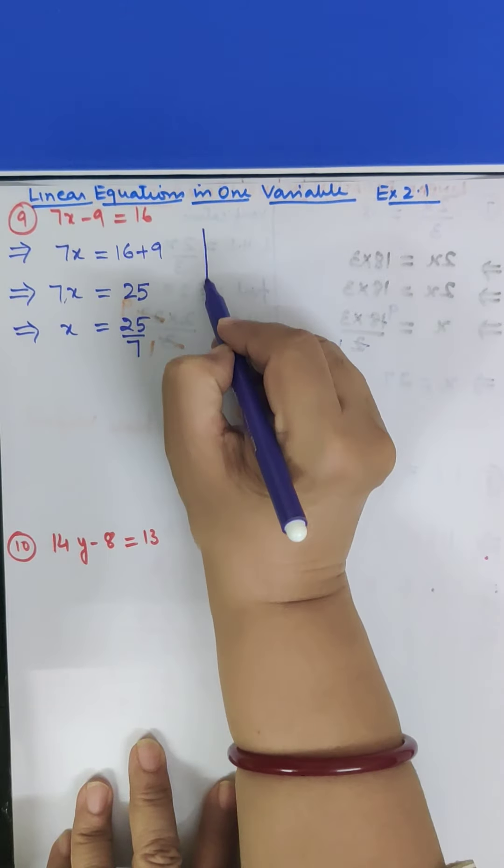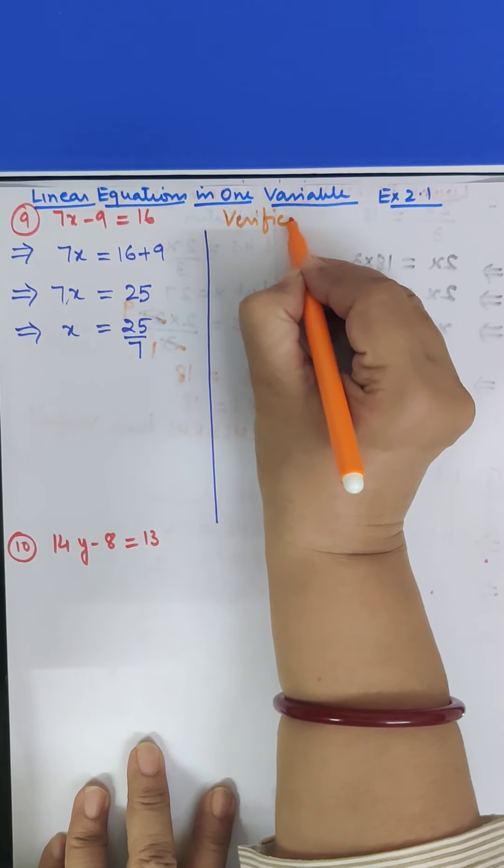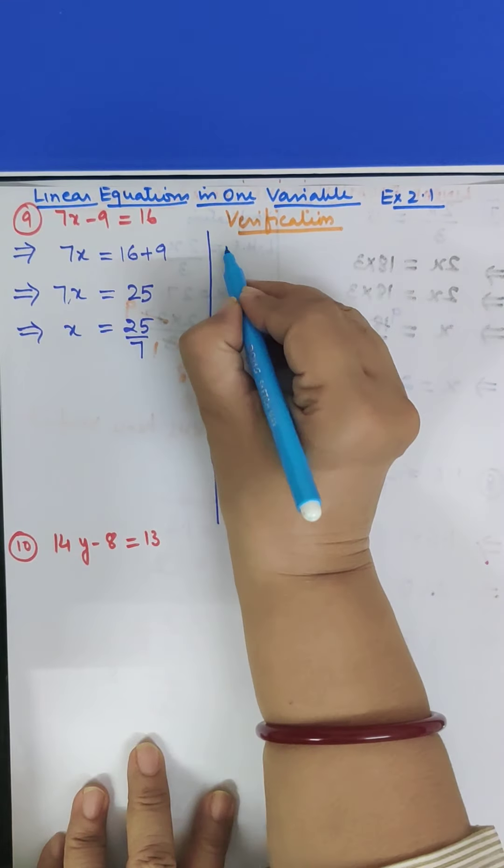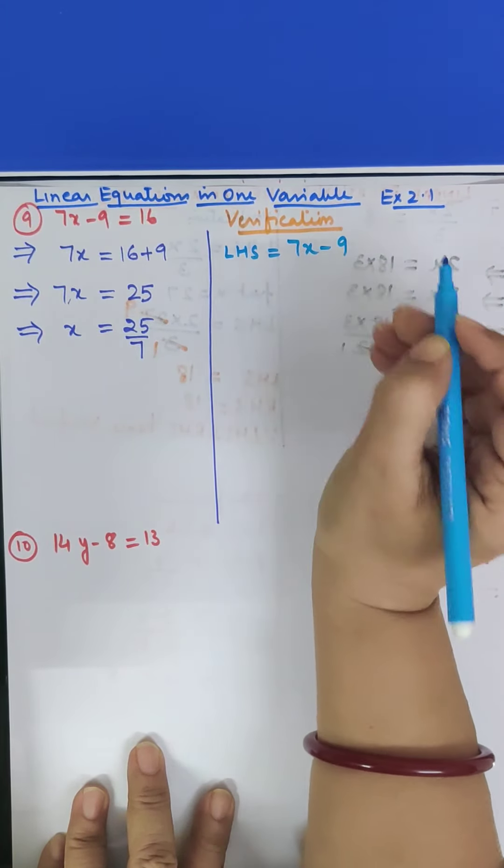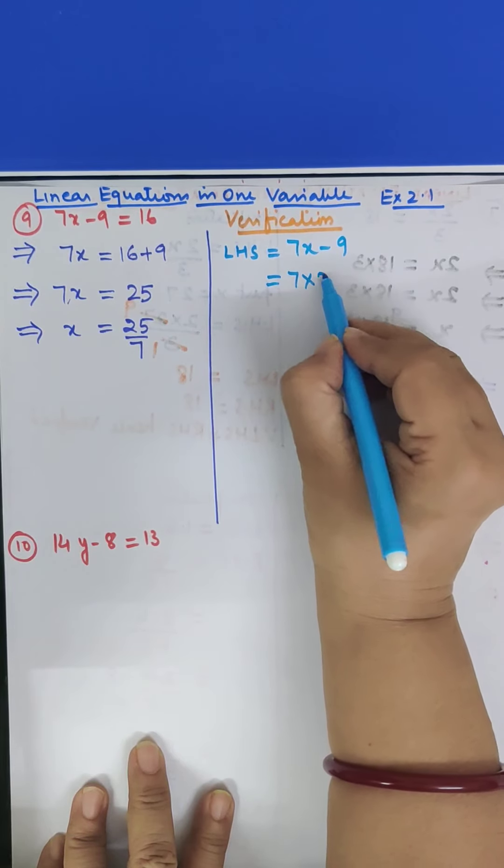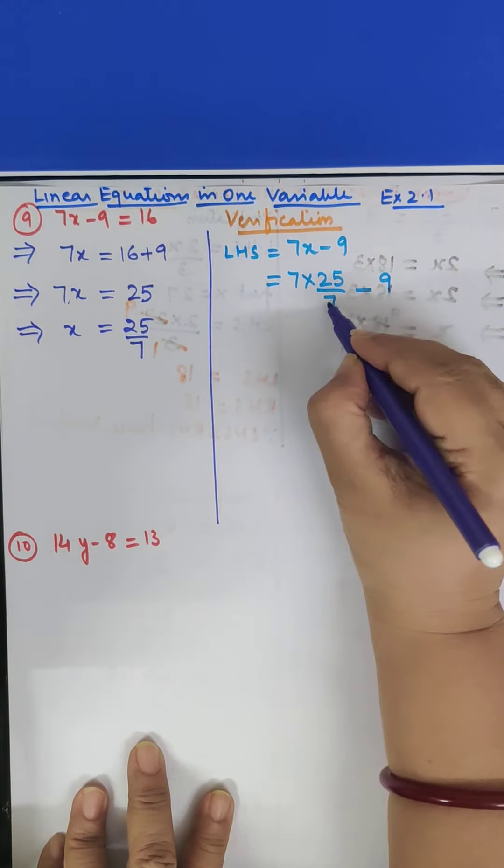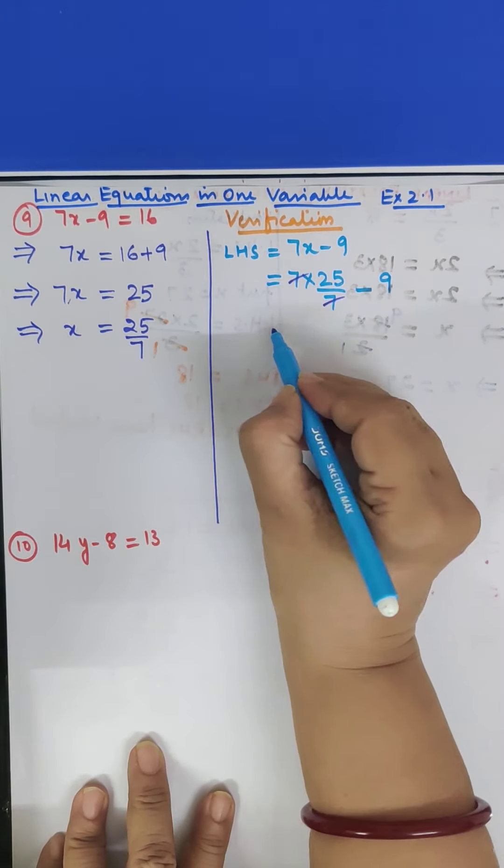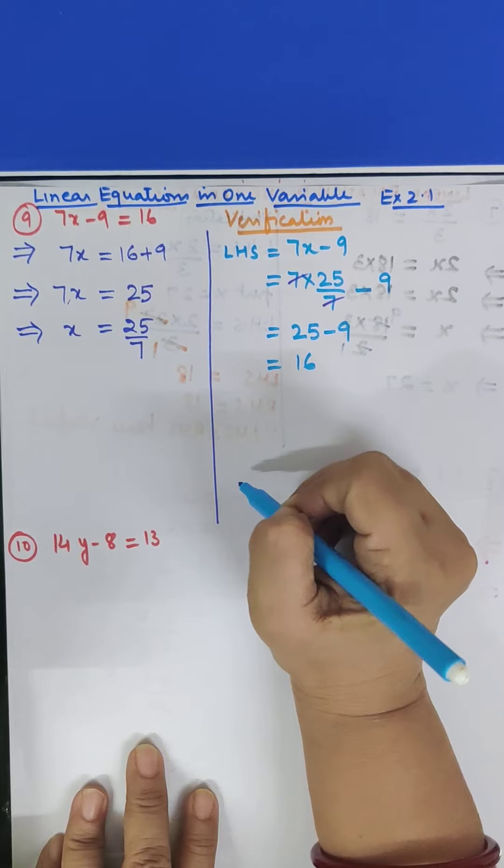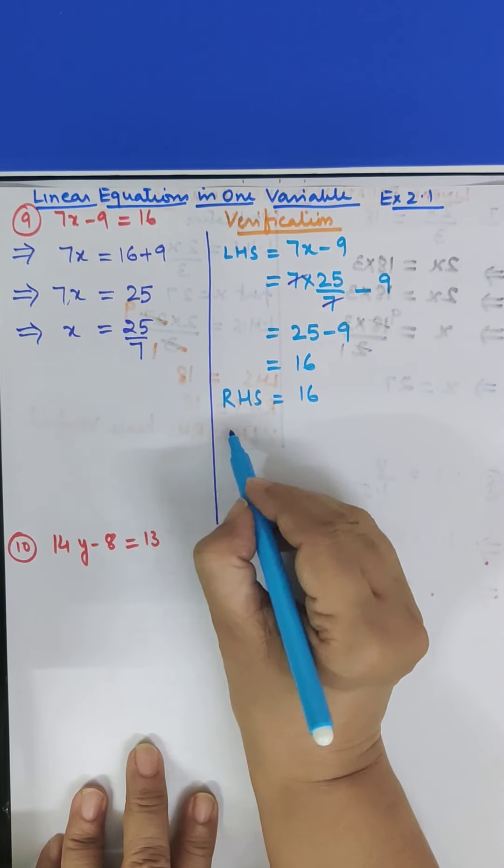Now we will do the verification. So in place of x we wrote 25 upon 7, then minus sign and then this 9. OK? This 7 and this 7 will cancel. So you are left with 25 minus 9. 25 minus 9 is 16. So LHS came out to be 16 and RHS is 16. Here you will write RHS is 16.